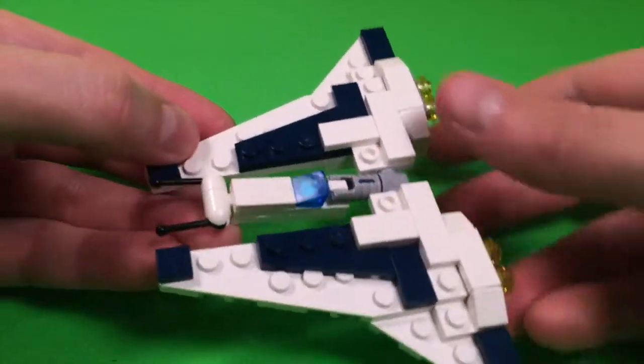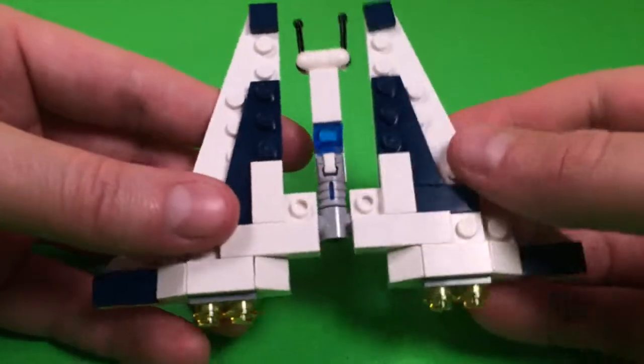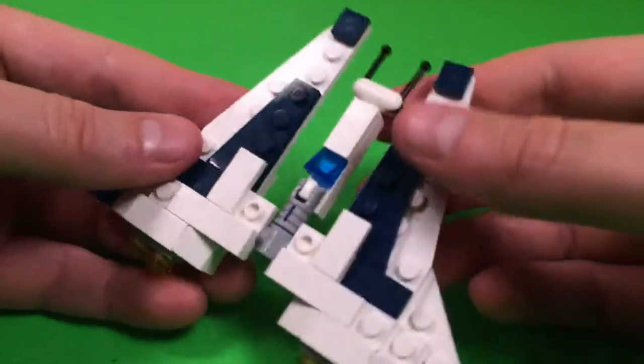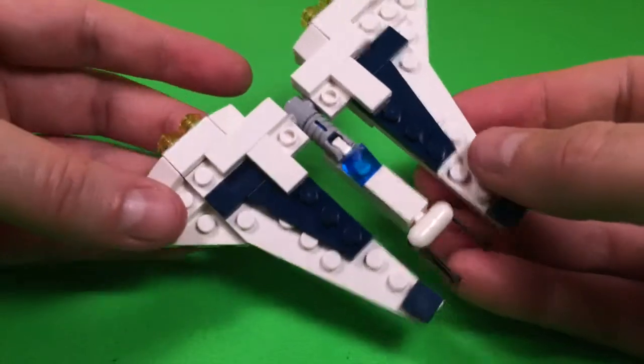Okay, there it is. This ship has two big wings and a little cockpit in the middle, and there are two guns coming off the front.